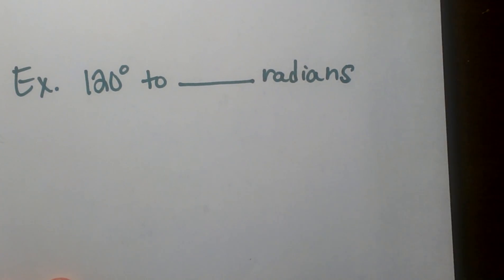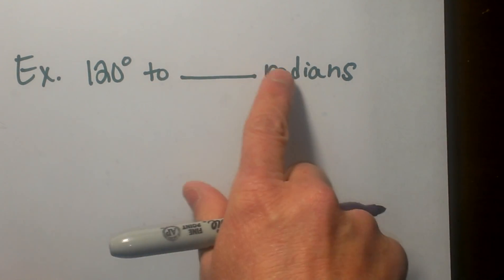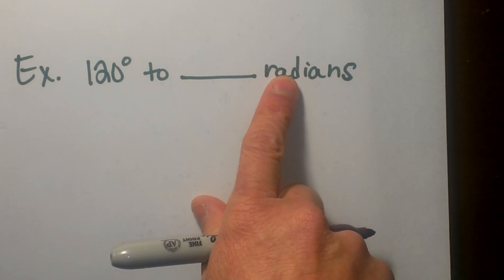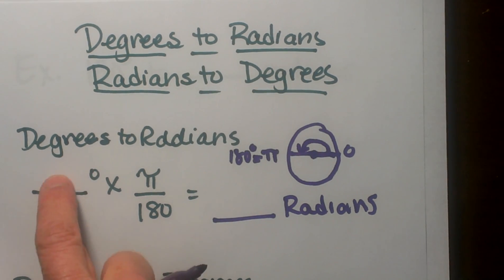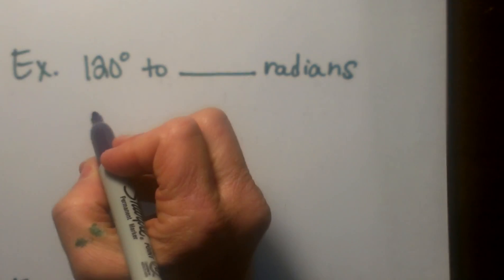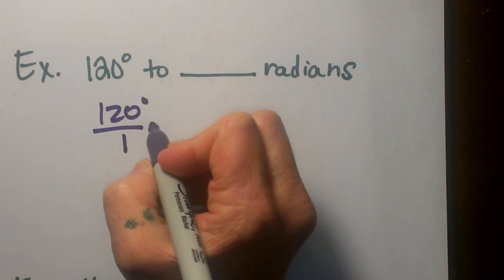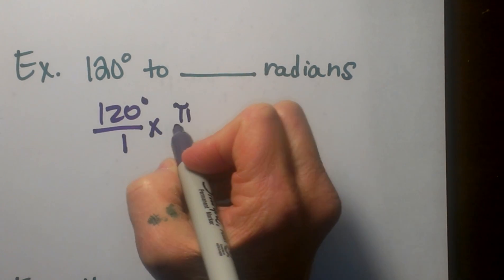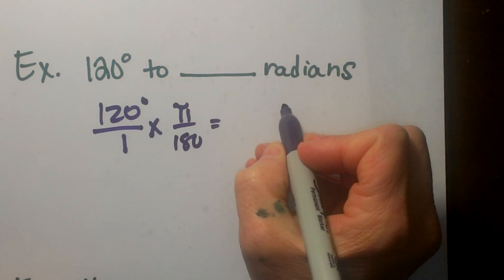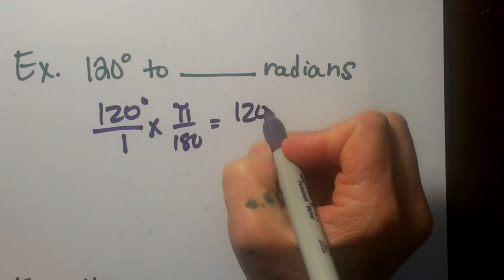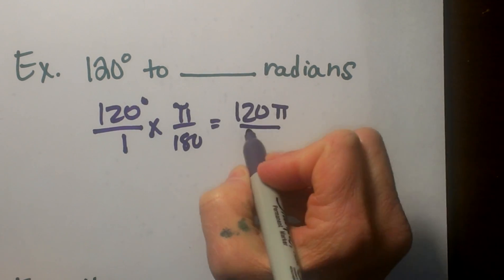So let's take 180 degrees and I want to convert it to radians. I'm going from degrees to radians, so let's look at our formula. I'm going to take my degree over 1 times π over 180. So let's write that out: 120 over 1 times π over 180, and let's multiply straight across.